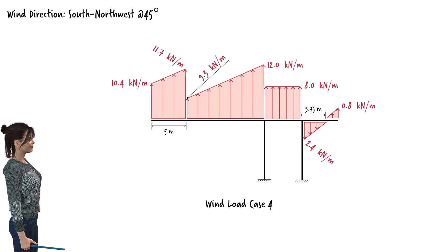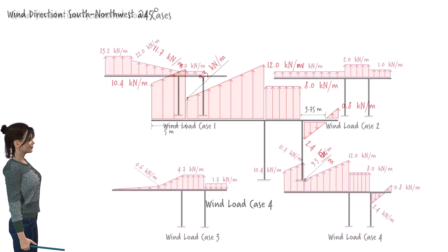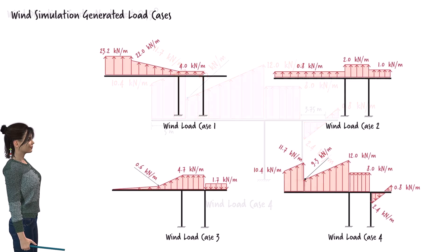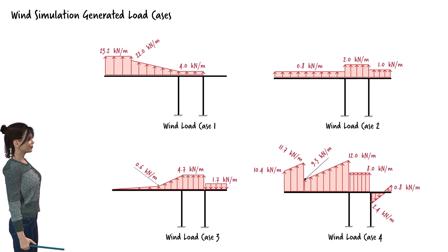After reviewing all possible wind direction scenarios, we have determined that loading cases 1 through 4 are the most critical. These cases have the greatest potential to impact the frame design and are therefore considered the main outcome of the wind simulation process.